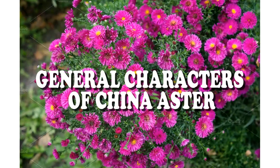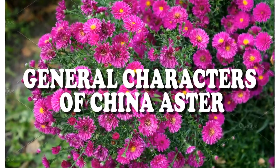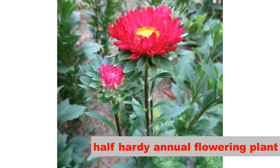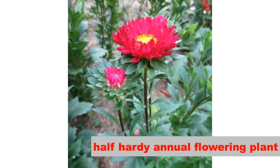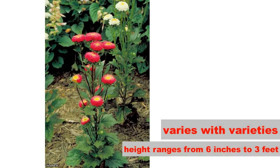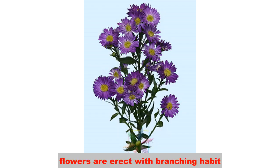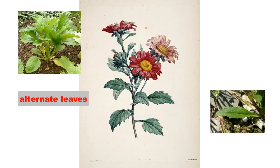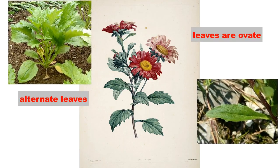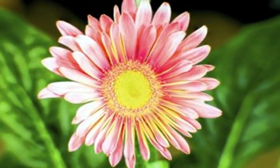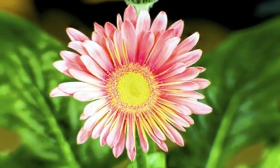The general characters of the plant China Aster are as follows. It is a half hardy annual flowering plant. Height of plant ranges from 6 inches to 3 feet. Plants are erect with branching habit. Leaves are alternate, broadly ovate with irregularly toothed margins.